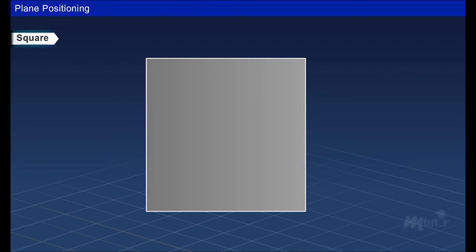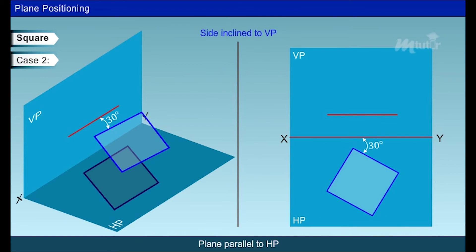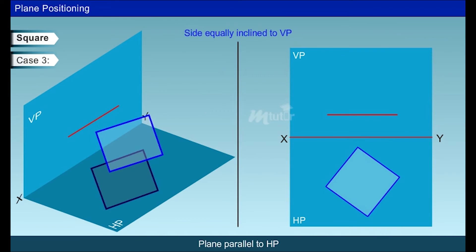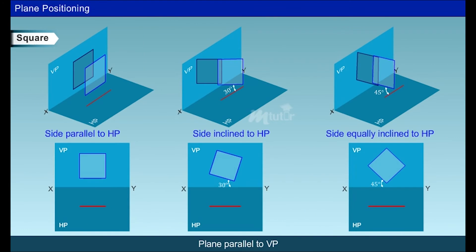A square plane consists of four sides of equal length. When a square lamina is parallel to HP and one of its sides is parallel to VP, it is drawn as shown. When the side is at 30 degrees to the VP, it will be drawn as shown. When all the sides are equally inclined — that is, at 45 degrees to VP — it will be drawn as shown. Similarly, when the square lamina is parallel to VP, the true shape is obtained from the front view for all three cases.